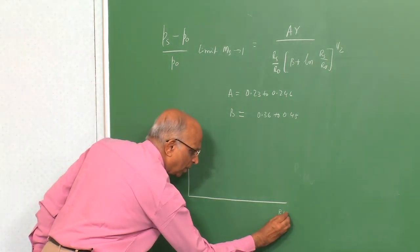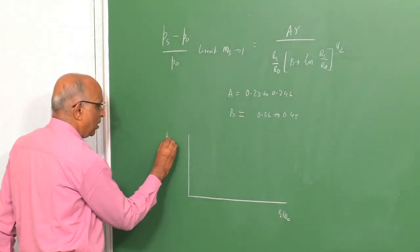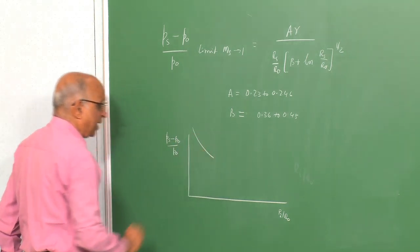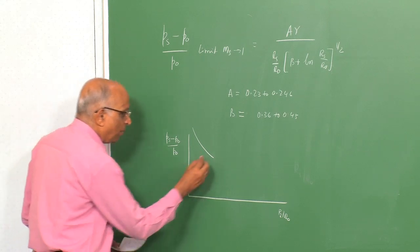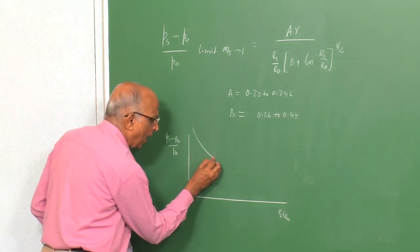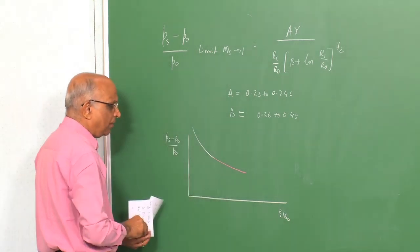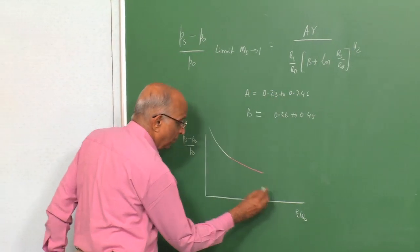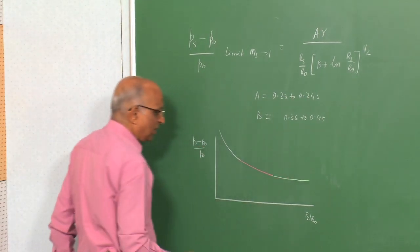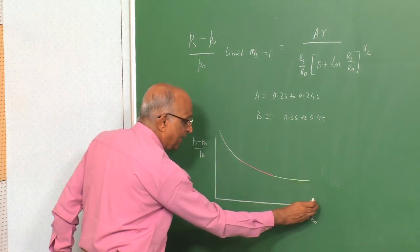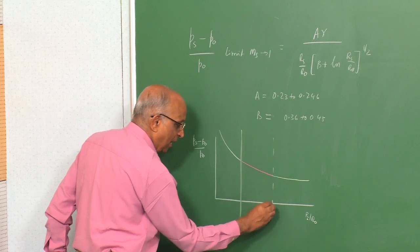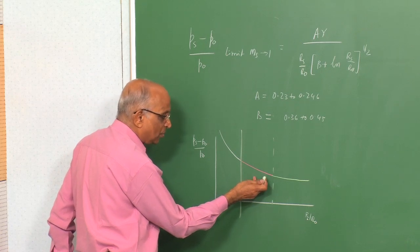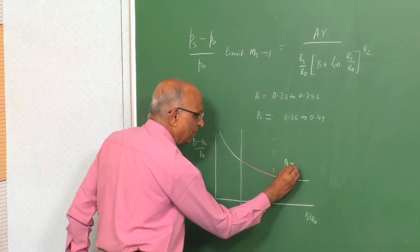The constants in the acoustic expression are: A is typically around 0.23 to 0.246, and B is equal to 0.36 to 0.45. This means in the far field where the blast wave decays to an acoustic wave, the overpressure follows acoustic theory. Combining the near field and far field gives a composite curve: strong blast region, then Mach number decay effects, then the acoustic regime.